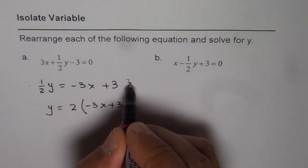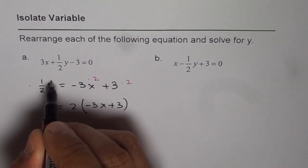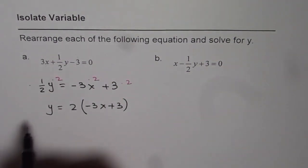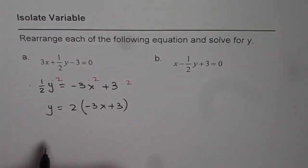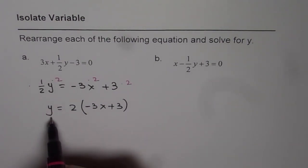So at this stage, what we are doing is, we are times this by 2, times this by 2, and times this by 2. All the 3 terms are multiplied by 2. It's not squared. Multiplied by 2. So 2 and 2 cancels, you get y.